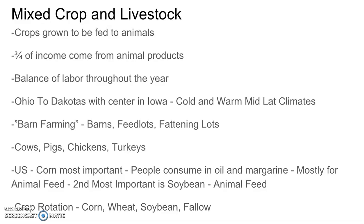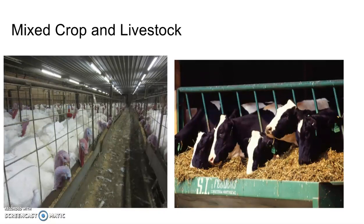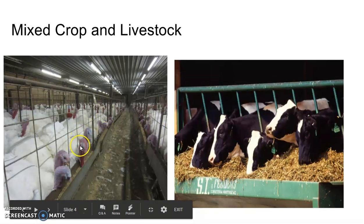The second most important crop in mixed crop and livestock is soybean, used mostly for animal feed but also for oil. They practice crop rotation: corn, wheat, soybean, and then fallow for a season — meaning unplanted — to replenish soil nutrients. If not left fallow, they may plant alfalfa or rapeseed, which also help replenish the soil. Pictures show turkeys in a barn and a feedlot for cattle.